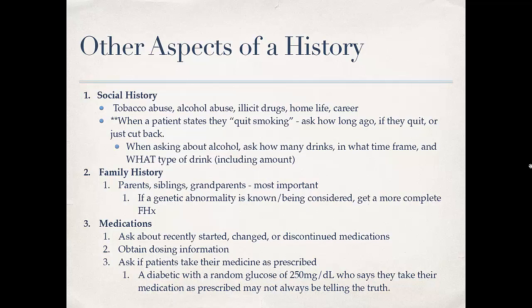Social history: are they smoking, and how much? Same thing with alcohol and illicit drugs. Their home life — do they feel safe at home? What's their occupation? Sexual history is important too, though I didn't include it here. Family history — you want to ask mostly about siblings and parents. If something seems like a genetic disorder, you can gather further information to help build a family tree.